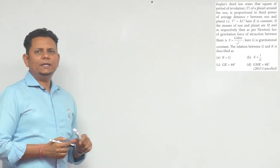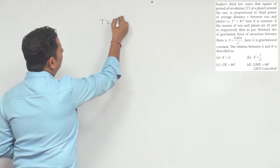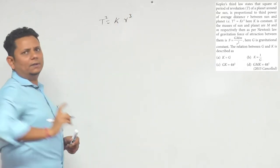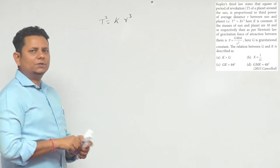So sab se pehle, T² = Kr³. Second, we know that GMm/r² is a force of attraction.